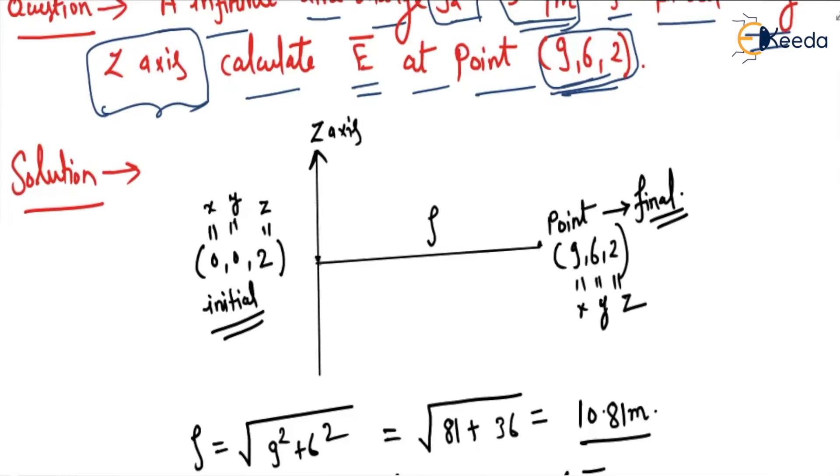So the perpendicular distance from this z-axis to the point is rho, and we will define the corresponding point on the z-axis. On the z-axis, the x value is 0 and y value is also 0, and the z value will be equal to 2 because we want the perpendicular distance.